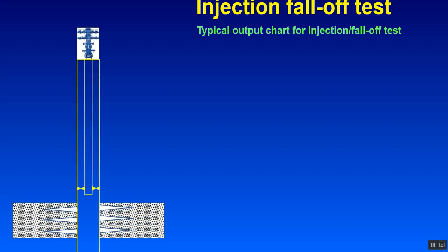For injection fall-off test, this is a typical chart which is output from injection chart. Usually this is normal injection or water injector well completion. This is just open-end or simple completion. If you have a perforated interval and maybe packer, sometimes we install packers or sometimes no need depending on the configuration of the completion.